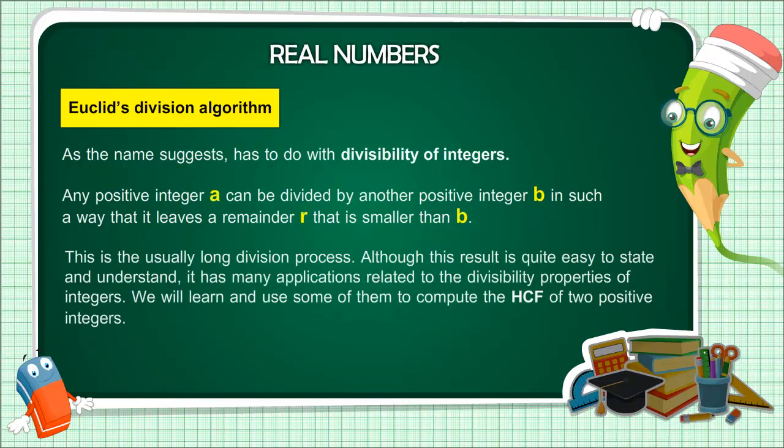This is the usually long division process. Although this result is quite easy to state and understand, it has many applications related to the divisibility properties of integers. We will learn and use some of them to compute the highest common factor of two positive integers.